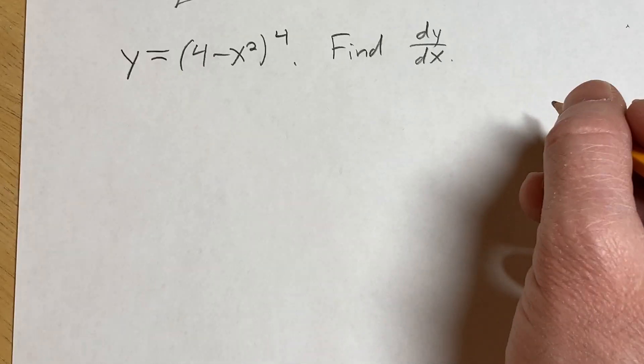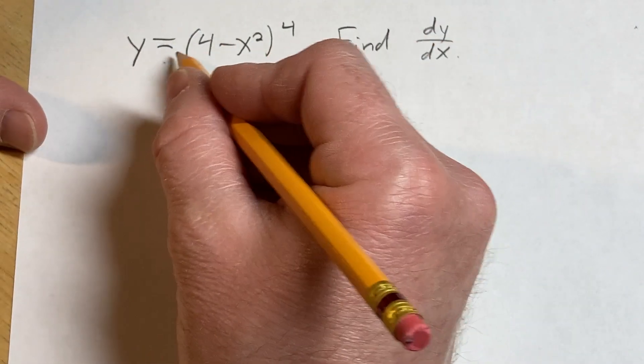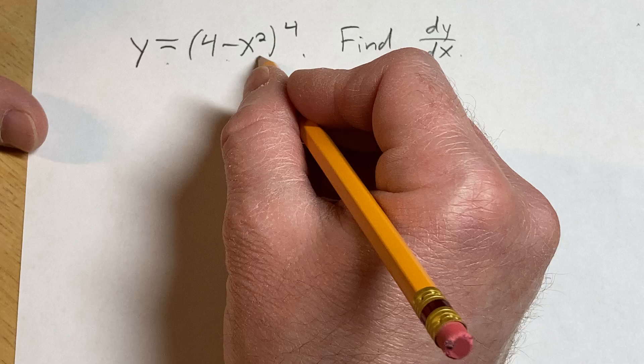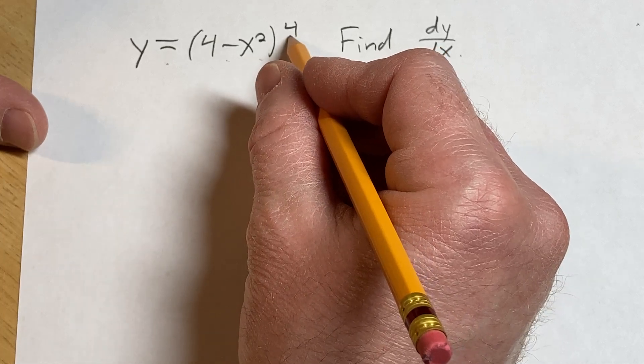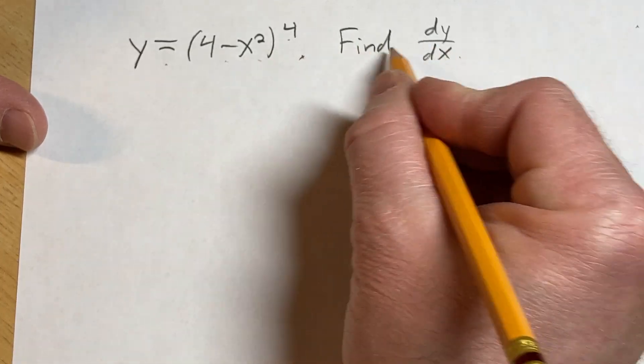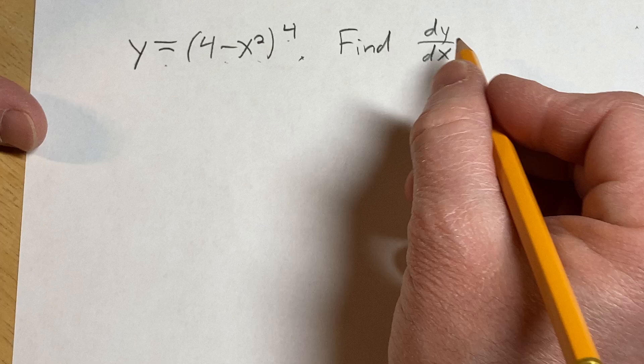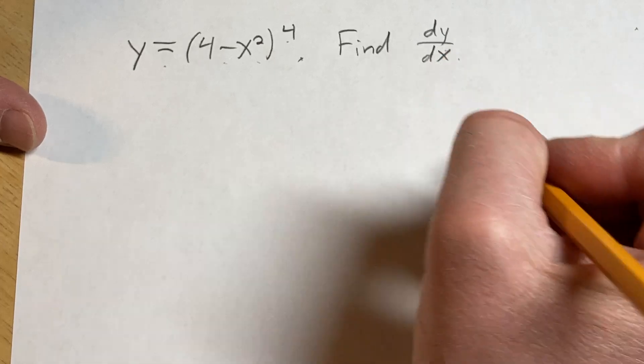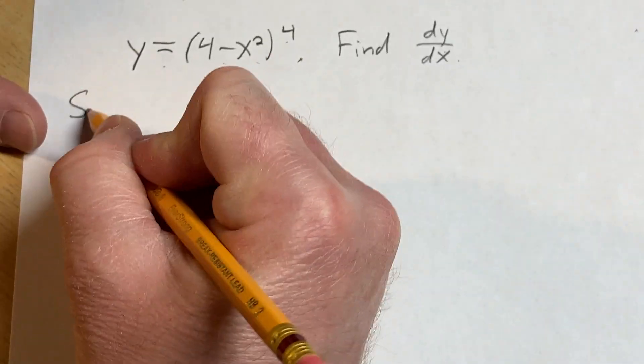Hello, in this video we're going to find a derivative. We have y equals 4 minus x squared, and it's all being raised to the fourth power. The question is to find dy/dx, which is the derivative of y with respect to x. Let's work through it.